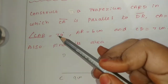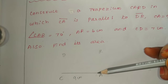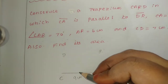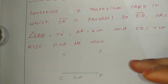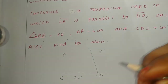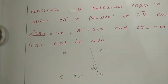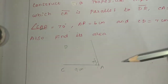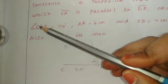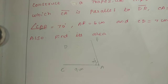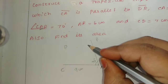Next, angle CAR is 70 degree. Now most of you would not know how to place the center angle, but it is clear. AR is 6 centimeter.